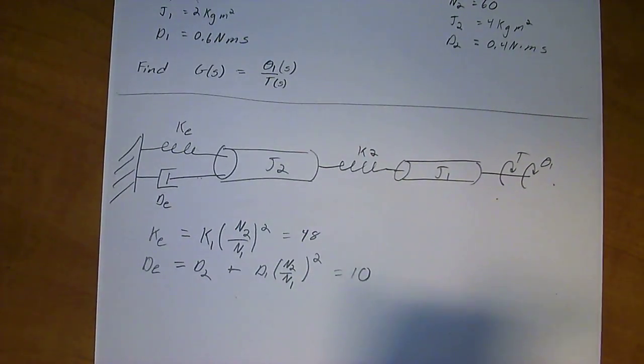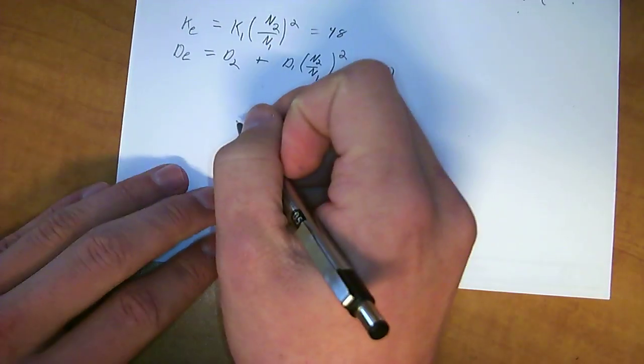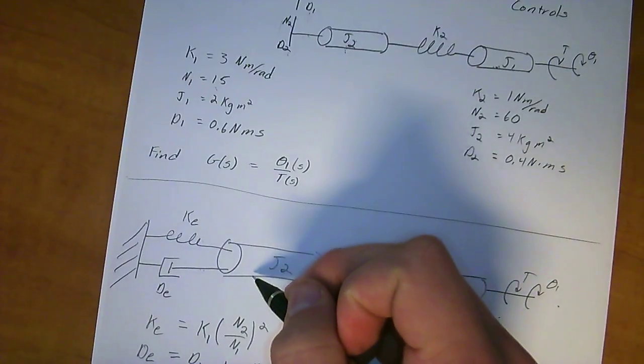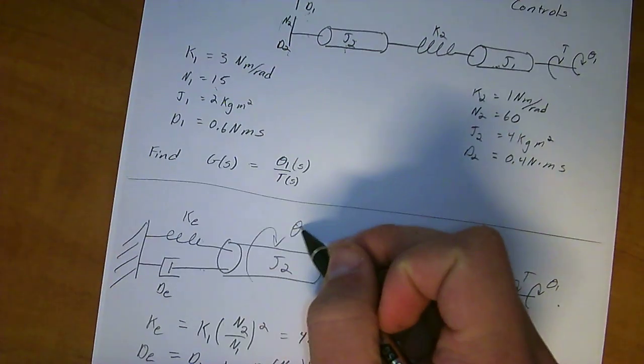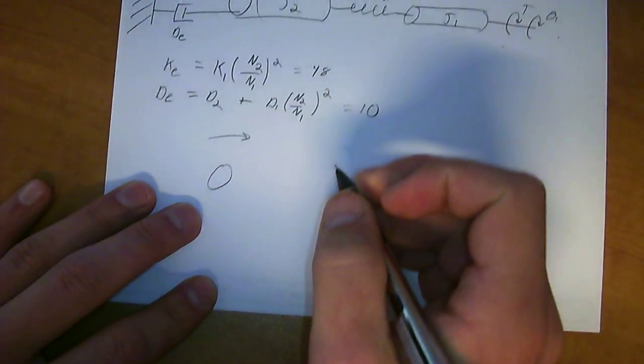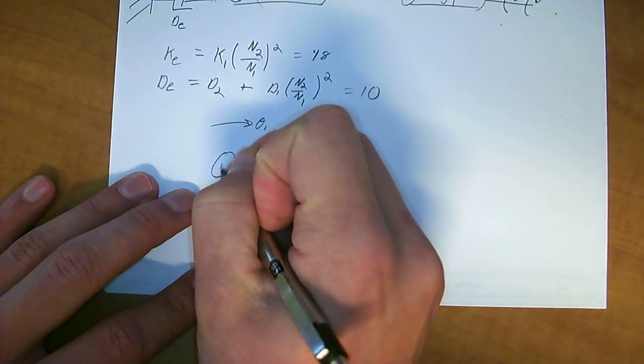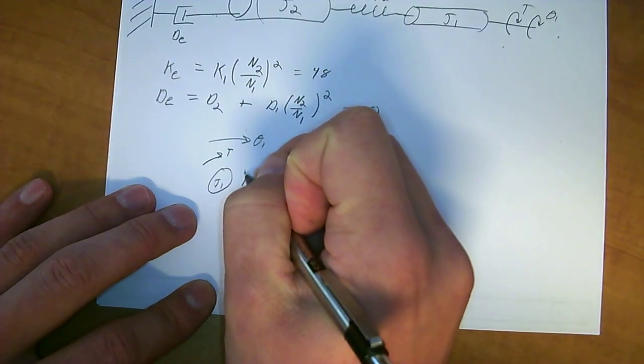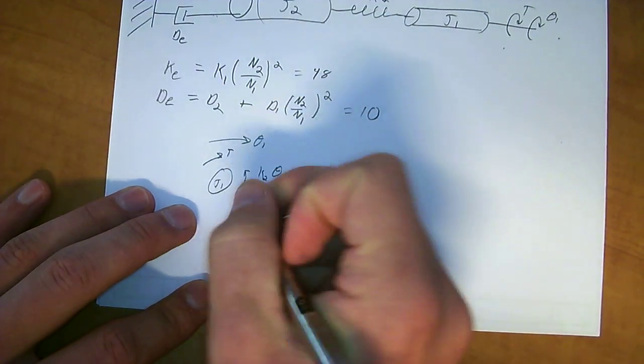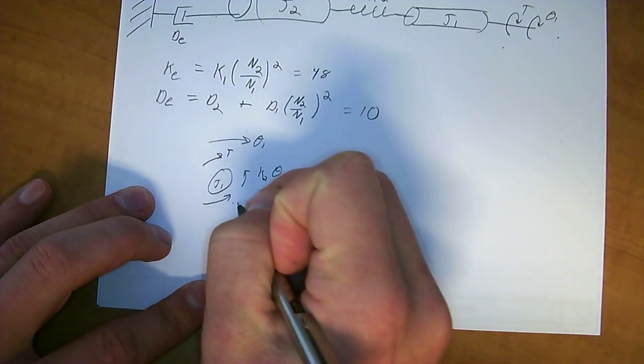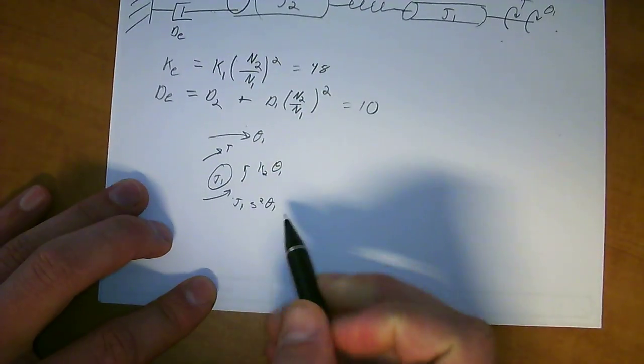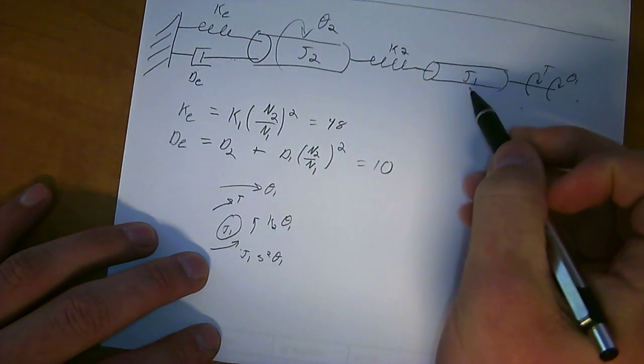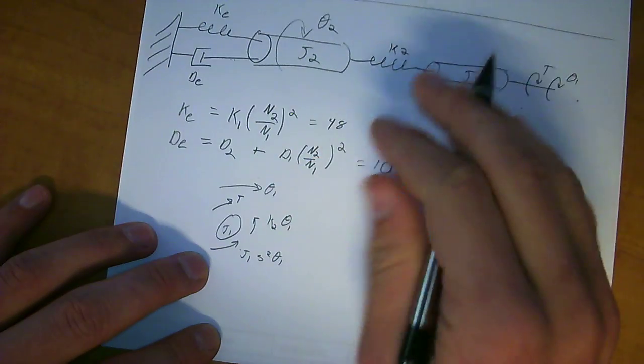So now, since we have those two things, we need to develop our equation. I'll go up here. I'll call this one Theta2. So at Theta1, this is going to be J1. You have a torque being applied. Then you have the resistance to the spring, K2 times Theta1. And then you have the inertia, J1 S squared Theta1.